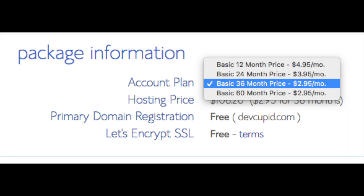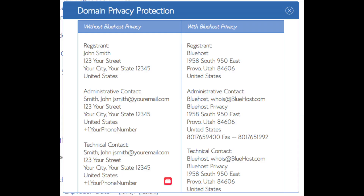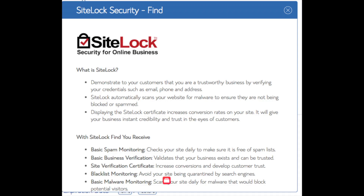You have 12, 24, 36, and 60 month options — you'll save money the longer you purchase your hosting for. I'm going to select the 12-month package. Setup fee is free, domain registration is free, and Let's Encrypt SSL is free — this SSL certificate makes your site secure with the green bar and HTTPS. Domain Privacy is an add-on I highly recommend; it prevents telemarketers from getting hold of your personal contact information.